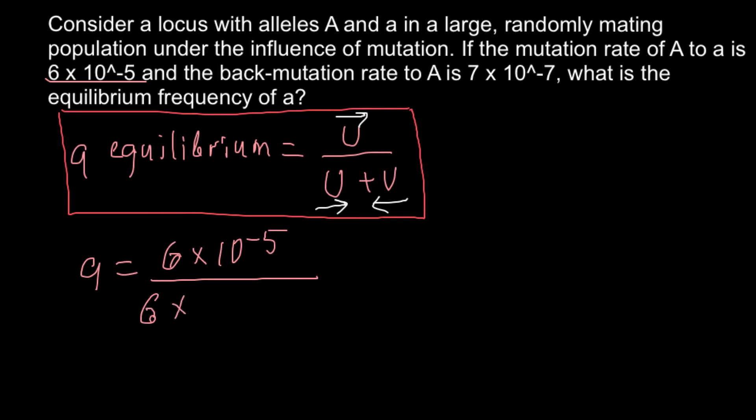plus the backward mutation rate, which is 7 × 10^-7. And as you see,